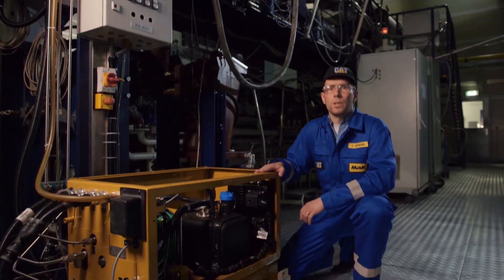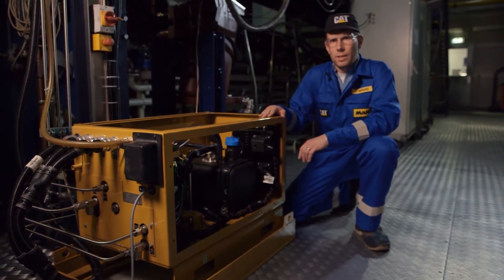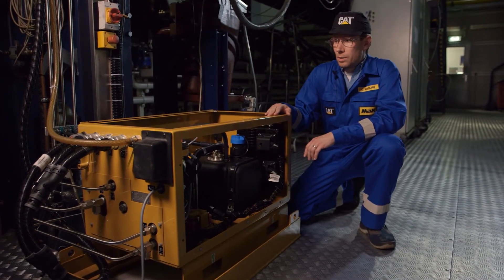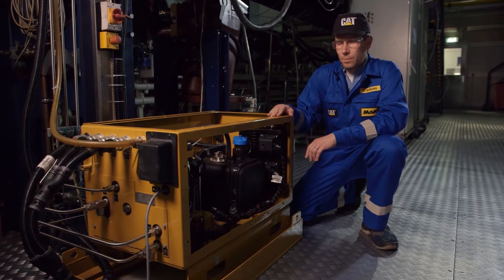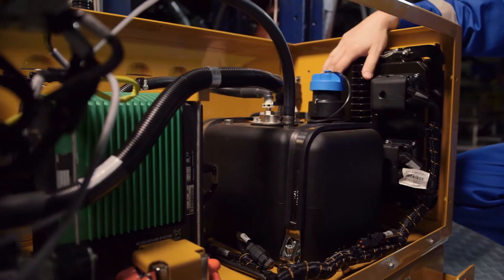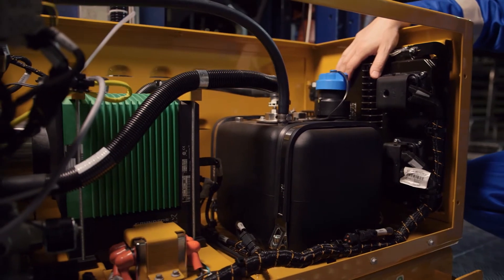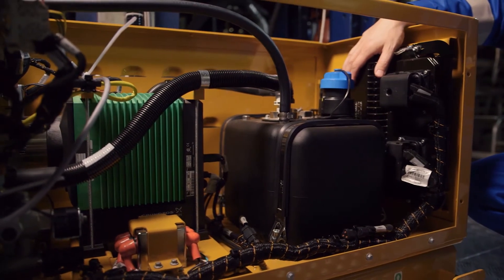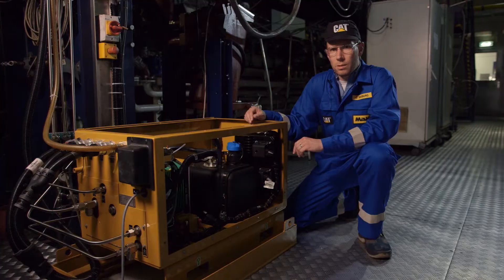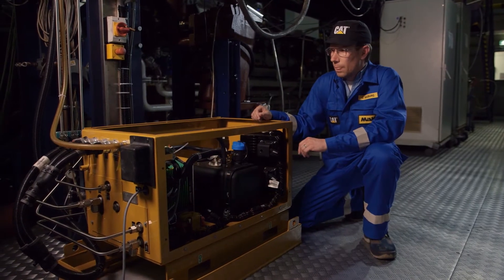This is a dosing unit. This is the heart of the CAT SCR system. It is a 100% in-house development. You see here the ECU. This is the same one we use in our engine. We have a very clear component design for easy access, maintenance and repair. The entire unit is very compact and robust design. This is ideal for the marine business.